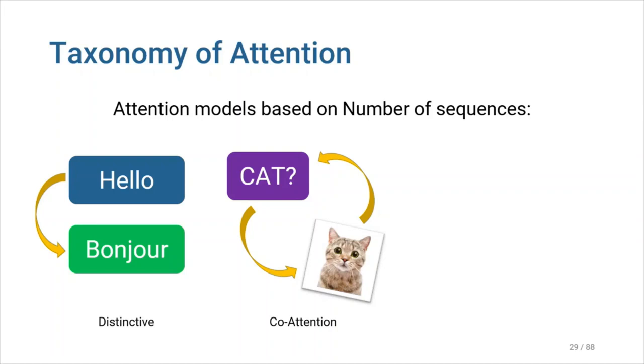A co-attention model works on multiple input sequences at the same time and jointly learns their attention weights to capture correlations between these inputs. For example, in visual question answering, in addition to modeling visual attention on the input image, it is also important to model question attention because all words in the text of question are not equally important to the answer of the question.